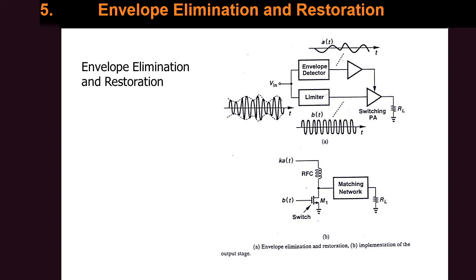Envelope elimination and restoration (EER) is similar to envelope tracking in that the drain of the amplifier is modulated by the envelope of the signal. However, in EER, rather than feeding the original signal to the gate of the amplifier, we feed a constant-amplitude phase-modulated signal. We extract the phase-modulated constant-amplitude signal from the main signal and amplify it with a switching-mode power amplifier, which is highly efficient. The original amplified signal is then restored at the load resistance RL. In other words, we split the signal into amplitude R and phase theta at the input, feed R into the supply, and feed the phase-modulated constant-amplitude signal to the switching-mode power amplifier — then we restore it.